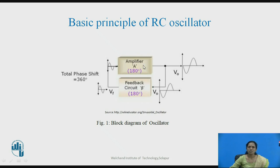For an RC oscillator, you must satisfy the requirement of oscillations — nothing but Barkhausen's criteria — which means that loop gain, that is A into beta, must be greater than unity, and the second condition is that the phase shift must be 360 degrees.